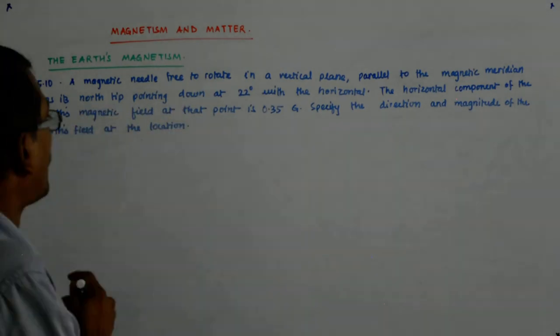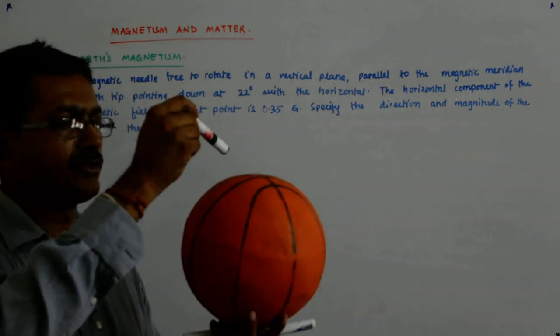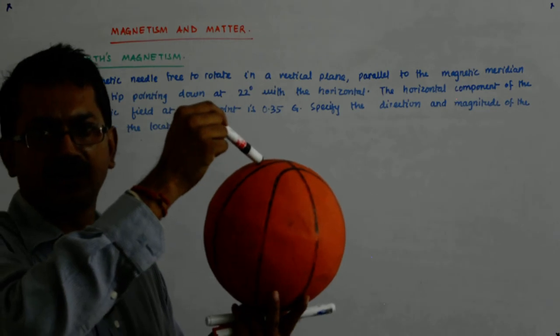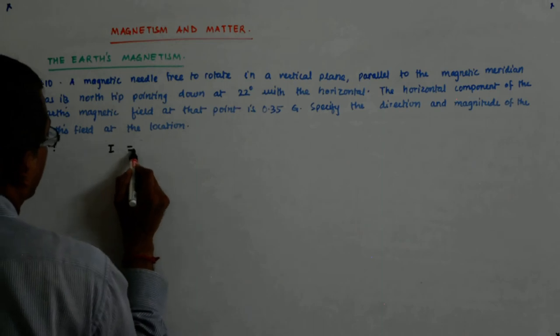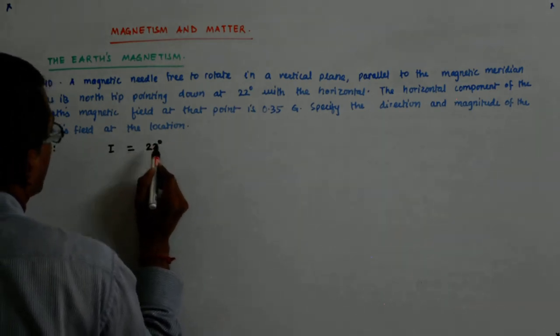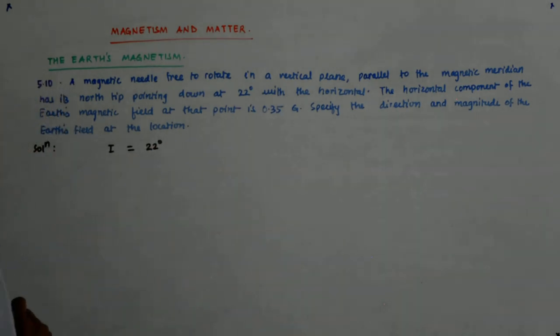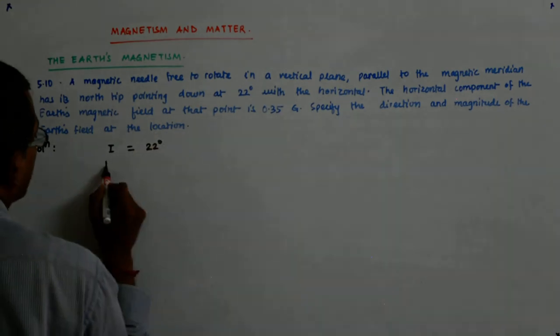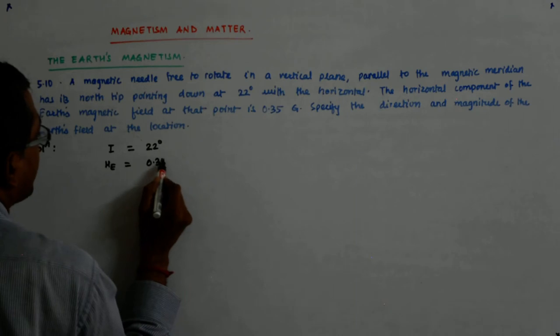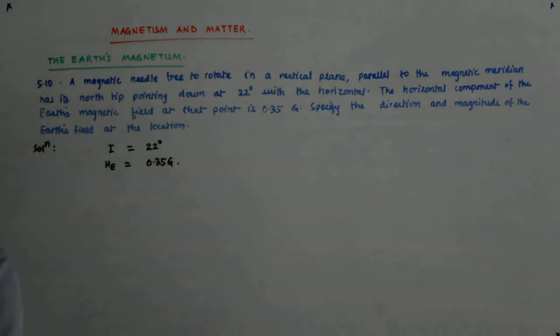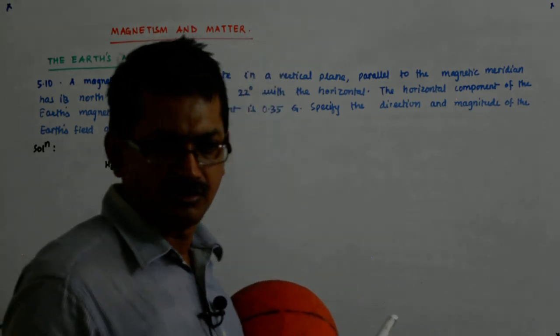Has its north tip pointing down at 22 degrees. So north tip is pointing down at 22 degrees means that it is the angle of inclination I or the angle of dip that is 22 degrees. And the horizontal component of the earth is 0.35 gauss.